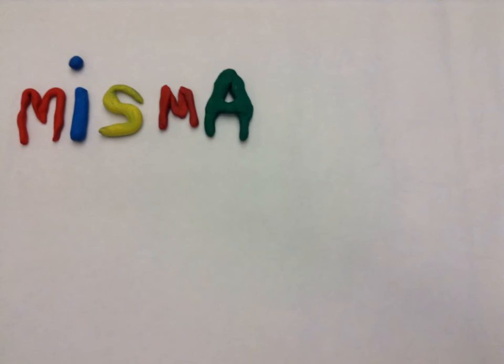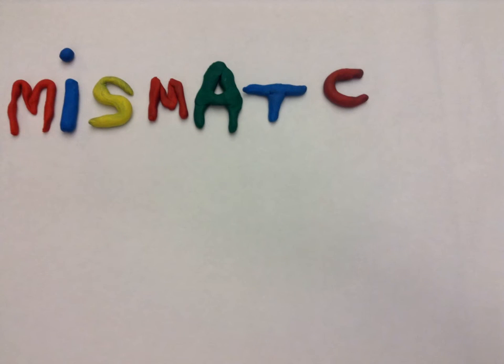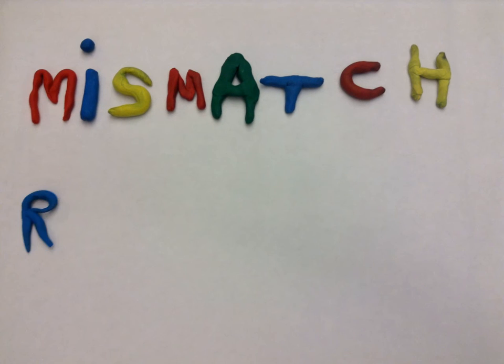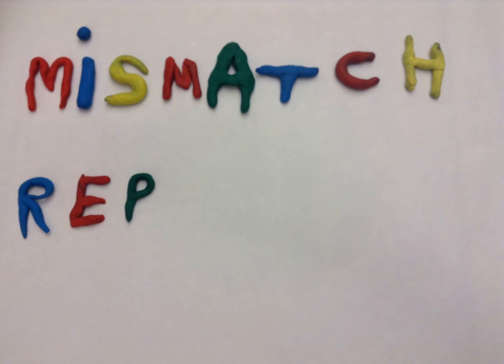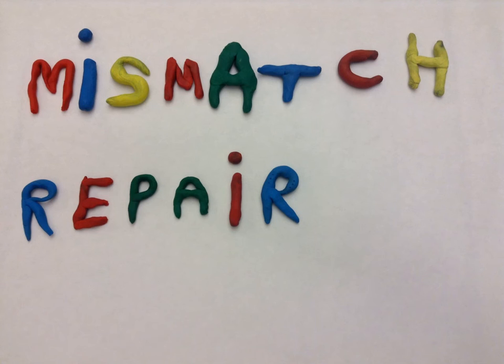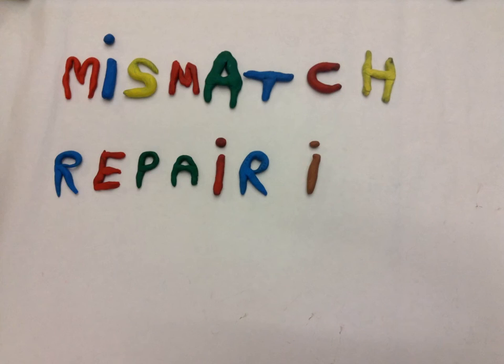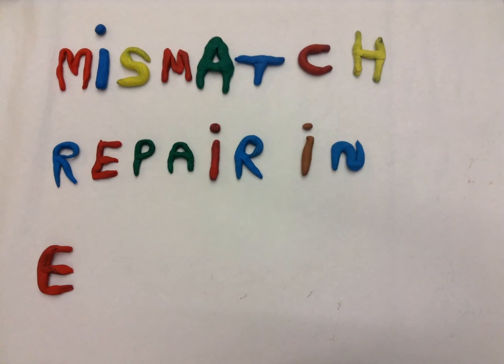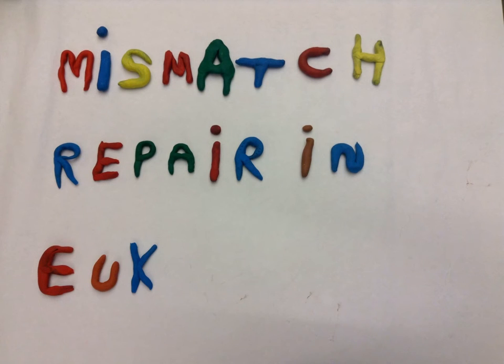DNA mismatch repair in eukaryotes. This mechanism takes advantage of the same information found in each strand of double-stranded DNA molecules. Any damage present in one of the strands is able to be repaired through excision and replaced with newly synthesized DNA from the complementary strand.